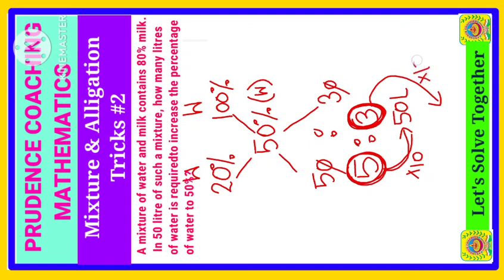3 is added in the ratio, so the actual value of this 3 will be 3 into 10, which is 30 liters. That means 30 liters of water, if added in the previous mixture, will make the water content in the new mixture 50%. The answer is 30 liters.